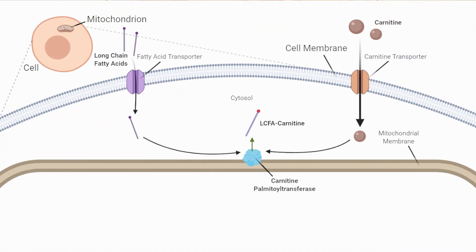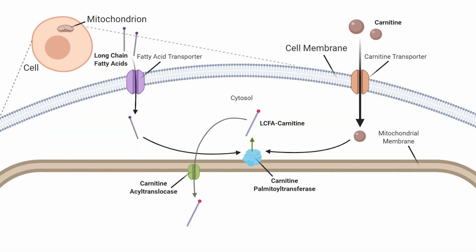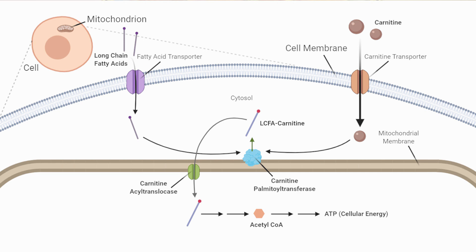Yet carnitine does something else as well. This time, carnitine acts on long-chain fatty acids, or more colloquially called fat molecules. Long-chain fatty acids are bound to carnitine in the cytosol of the cell by the enzyme carnitine palmitoyltransferase, forming long-chain fatty acid carnitine. Then, the carnitine acyl translocase allows this new molecule into the mitochondria, where it is used to eventually form acetyl-CoA — the same precursor molecule we discussed earlier that is used for cellular energy.